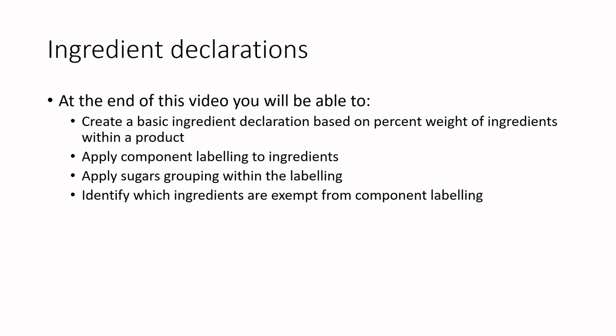You'll apply component labeling to ingredients, apply sugars grouping within labeling, and identify which ingredients are exempt from component labeling. We're going to be thinking on a theory basis, but it will be self-evident how you apply this within ESHA, and I'll walk you through in a second video on how to do some of these functional changes within your ESHA label.